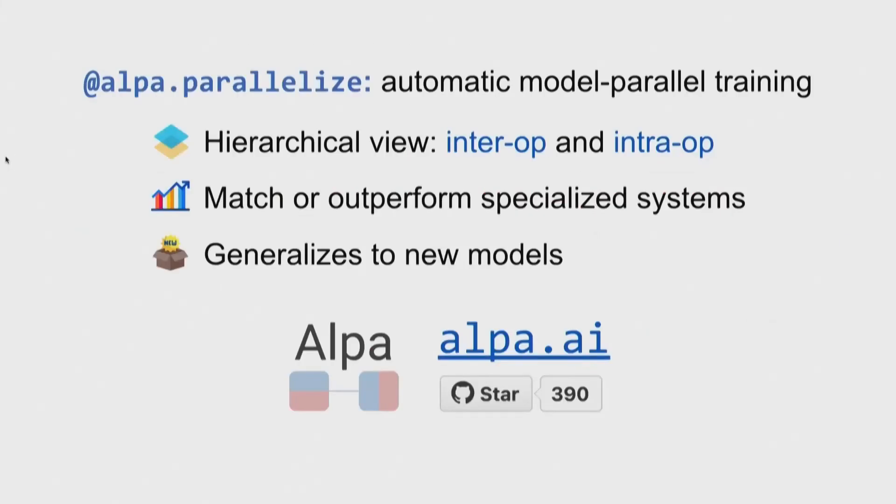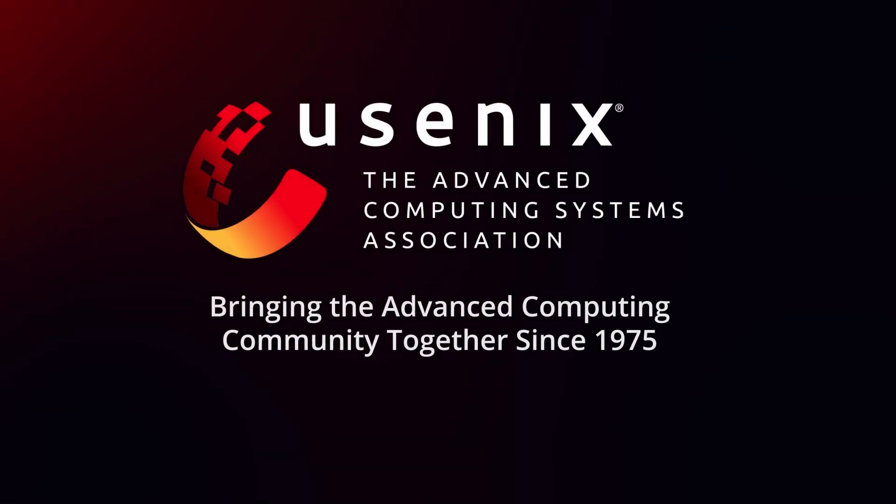So in summary, we present Alpa, automatic model parallel training system with both inter-operator and intra-operator parallelism. Alpa matches or outperforms specialized systems and generalizes to new models. You can try Alpa now and star us on GitHub by visiting alpa.ai. And again, happy to be here and we are happy to answer your questions. Thank you.